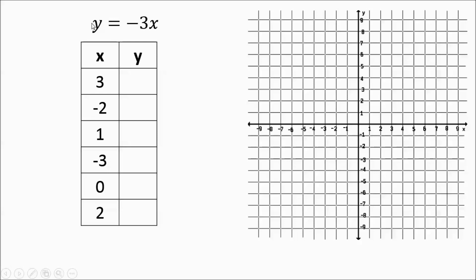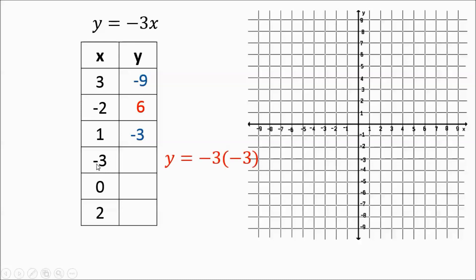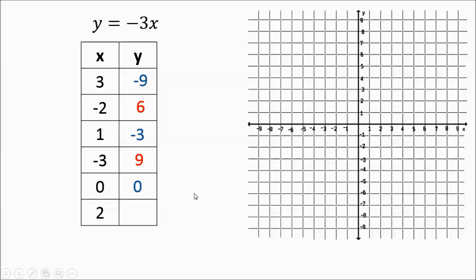Moving on to the next one. This next equation is y equals negative 3x. We're going to go ahead and start filling in our function table. In the first one we plug in 3 for x — negative 3 times 3 gives me negative 9. Then I'm going to plug in negative 2 — negative 3 times negative 2 gives me positive 6. Negative 3 times 1 — our next input is 1 — that's going to work out to negative 3. My next input is negative 3 — negative 3 times negative 3 gives me 9. My input of 0 — anything times 0 is 0. Then if I plug in a 2, negative 3 times 2 gives me negative 6. We have our function table filled in.